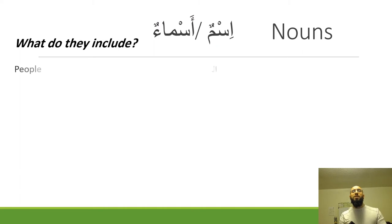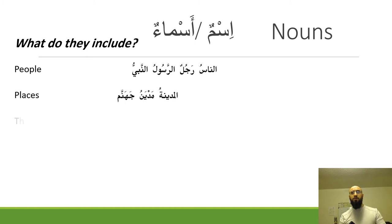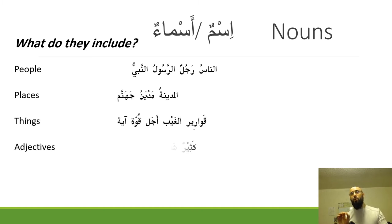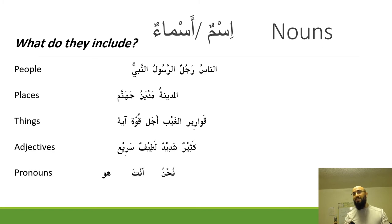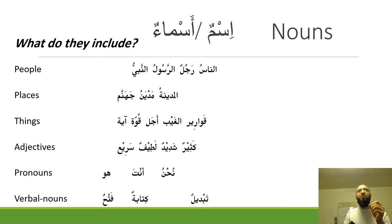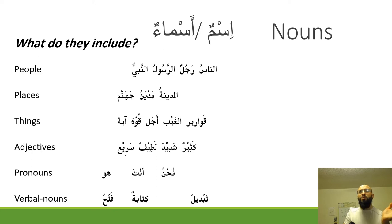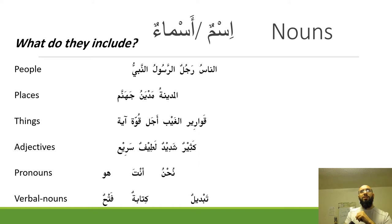Next come nouns, known in Arabic as asma. The singular form is ismon and the plural is asma. Unlike in English, Arabic nouns encompass far more than people, places, and things — pronouns, verbal nouns, and adjectives are all considered nouns. Essentially, everything that is not a verb or a particle is considered a noun in Arabic.